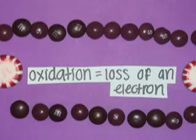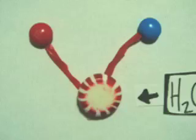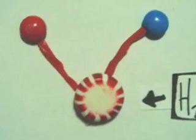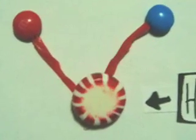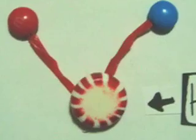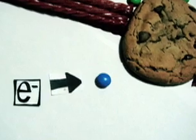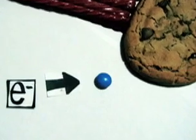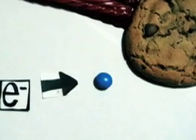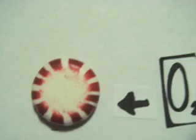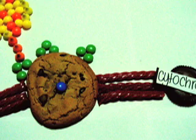To help restore the chloroplast, an H2O molecule in the aqueous thylakoid space donates an electron, which is grabbed by an accessory protein. This process is known as photolysis, and it breaks down the water molecules, giving off oxygen.